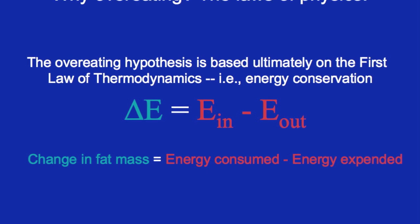What the community has done since the Second World War, since von Norden in 1903, is take this equation — delta E equals E-in minus E-out, change in fat mass equals energy consumed minus energy expended — and say: if we increase energy consumption, we increase E-in, and keep energy expenditure the same, then fat mass has to go up. Therefore, eating too much, consuming too much energy, is a cause of obesity.